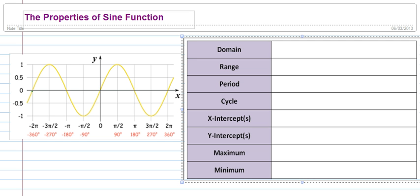To start off, I just want to lay out properties that we need to cover. So we should be aware of our domain, range, period, cycle, x and y intercepts, and our maximum and minimum.